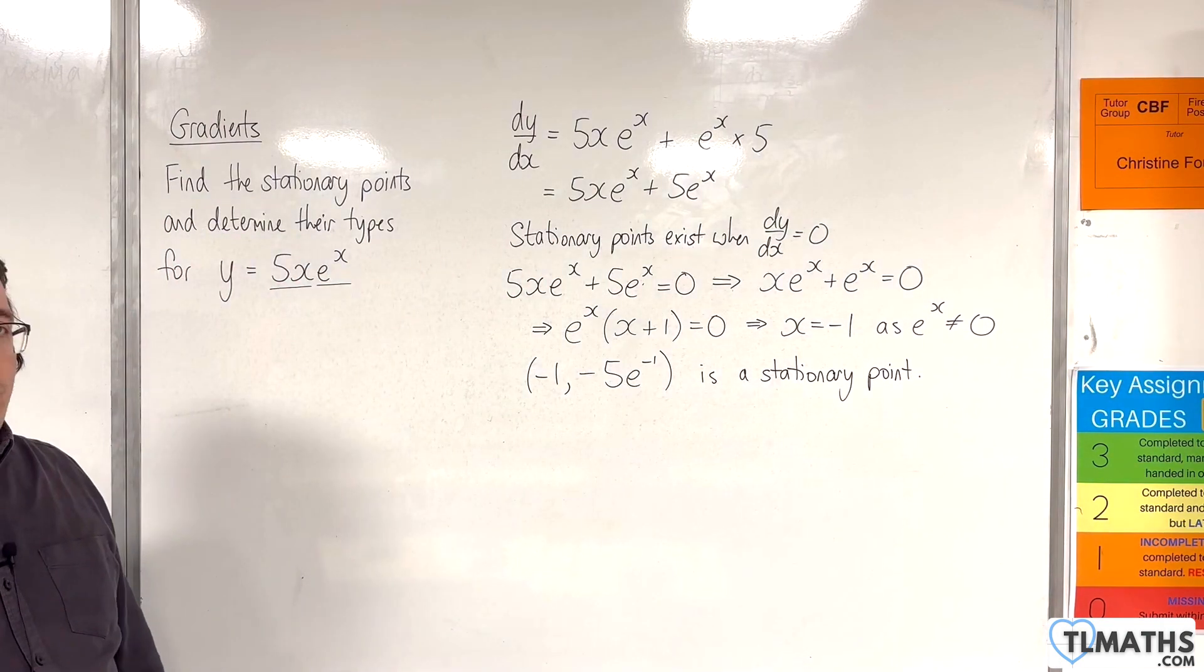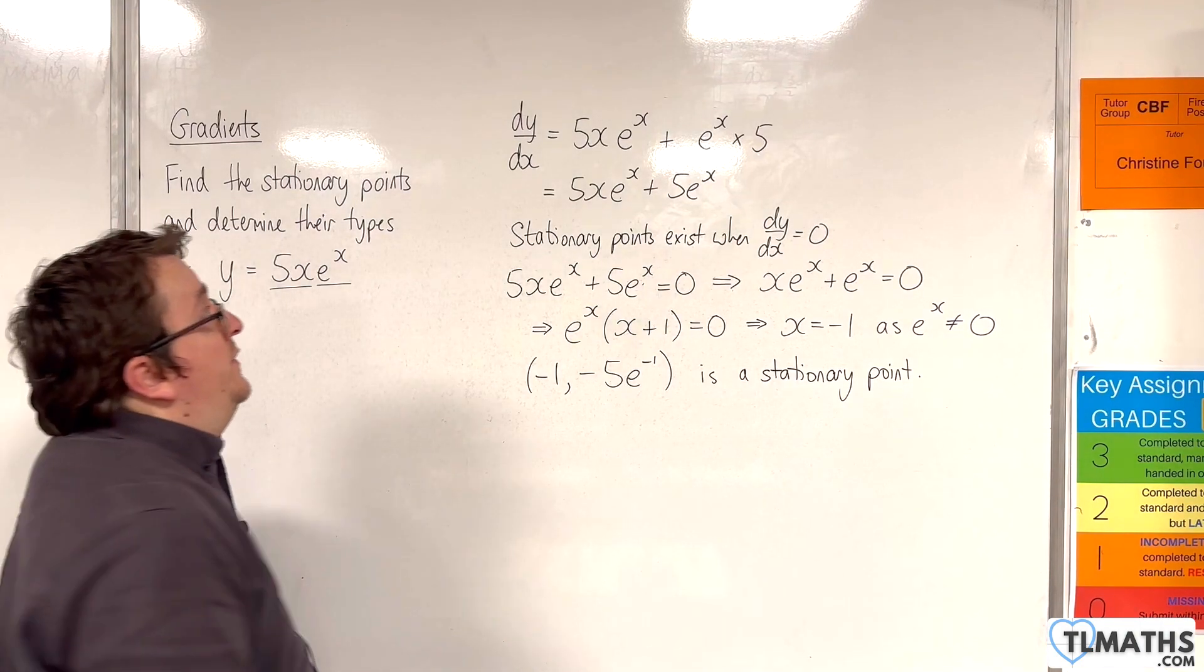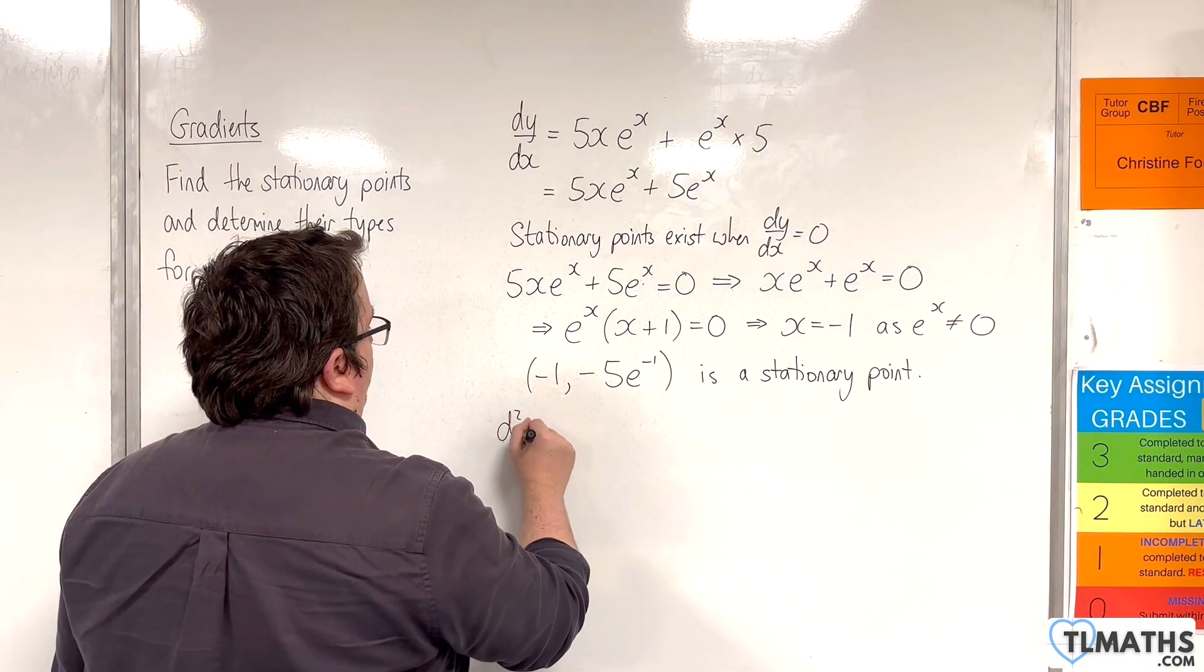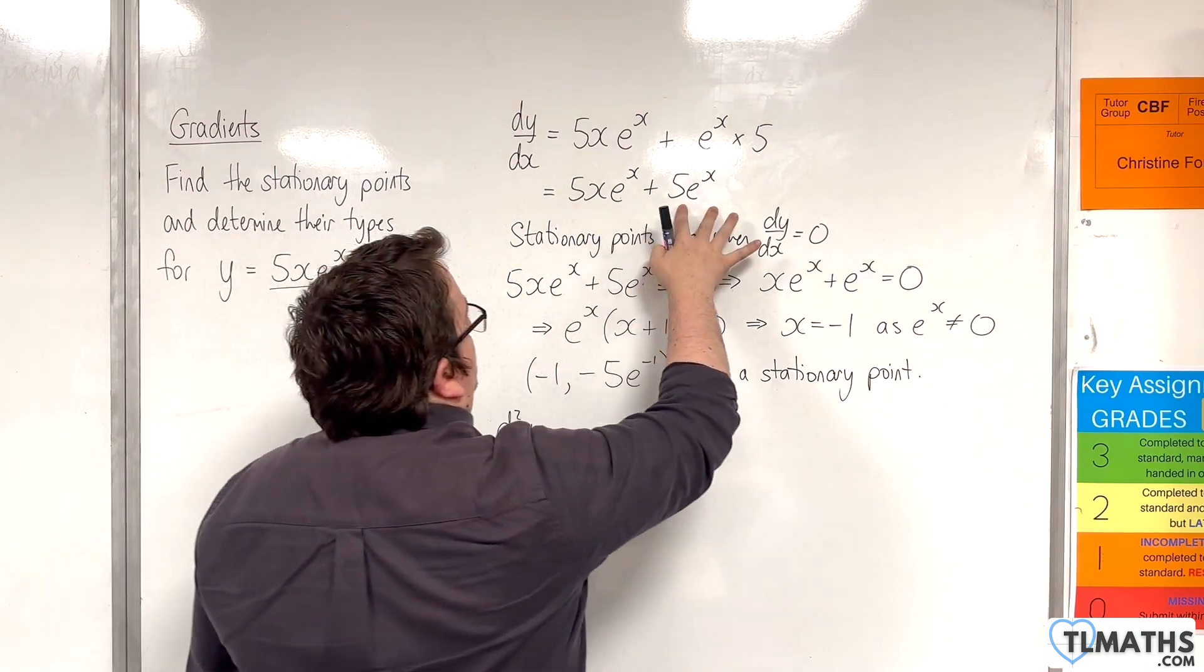We now need to determine its type. I'm going to do that using the second derivative test. So I'm going to find the second derivative, d2y by dx squared, and I'm going to differentiate this.